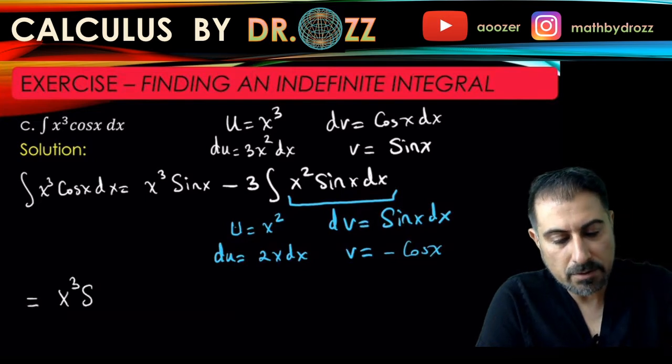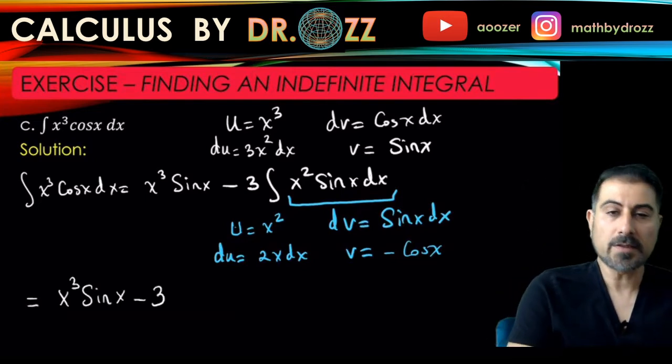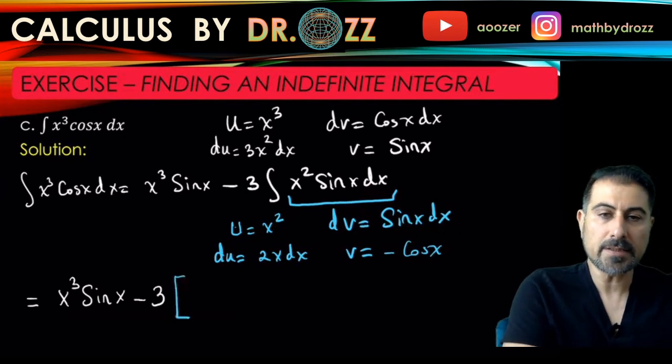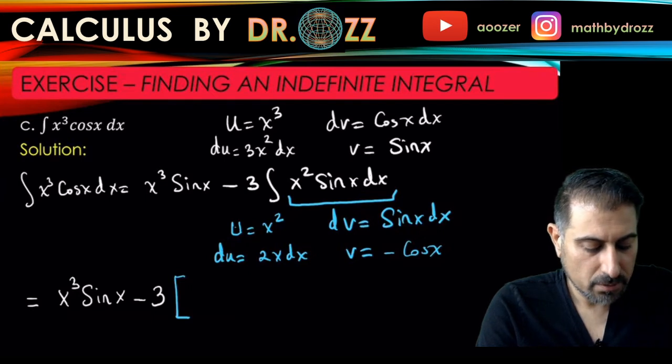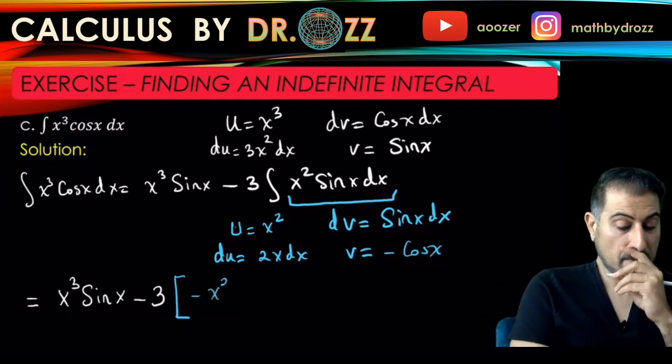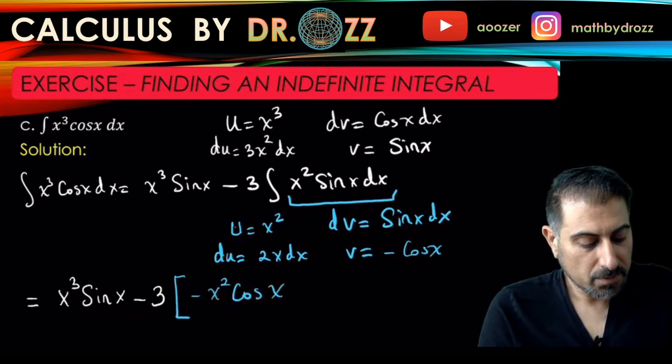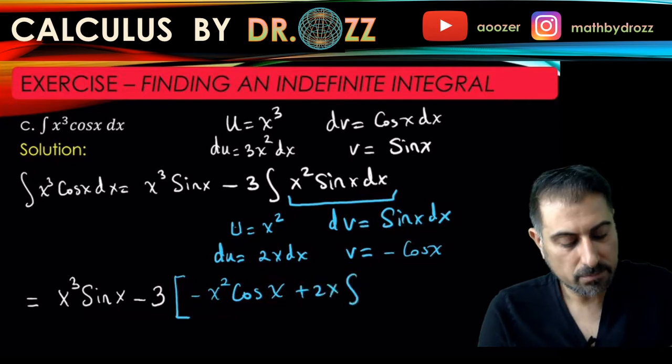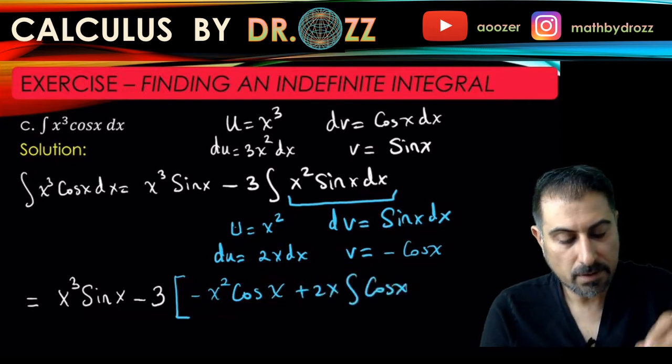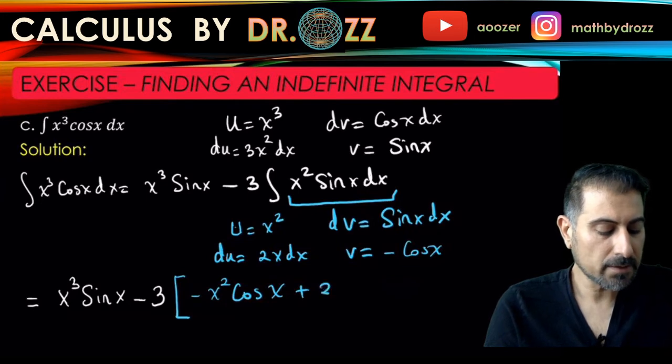So now I'm going to use a different color, blue color here, to write down what this integral x squared sine x dx corresponds to. So u times v minus x squared cosine x minus v du. So that's plus 2x integral cosine, well x should be inside obviously right, plus 2x cosine x dx.